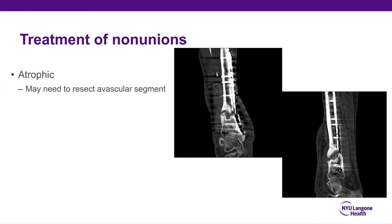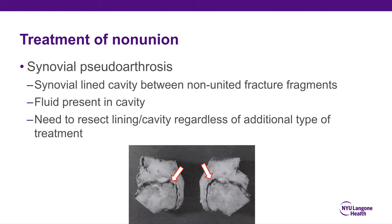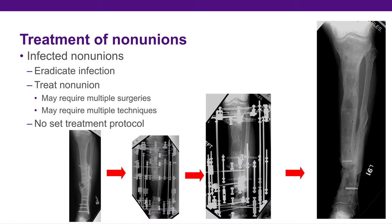You may also need to resect an avascular segment in atrophic non-union — if a distal tibia is completely avascular, you have to get rid of it before you can expect healing. In synovial pseudoarthrosis, you get a synovial-lined cavity between non-united fracture fragments with actual fluid present; you need to resect the lining and cavity regardless of additional treatment. In infected non-union, the main thing is you have to eradicate the infection first — if you don't get the infection to go away, you're not going to get the bones to unite. Then treat the non-union. It may require multiple surgeries and multiple techniques; there's no one set treatment protocol — it has to be based on the fracture pattern, the non-union, and what's going on with the patient.